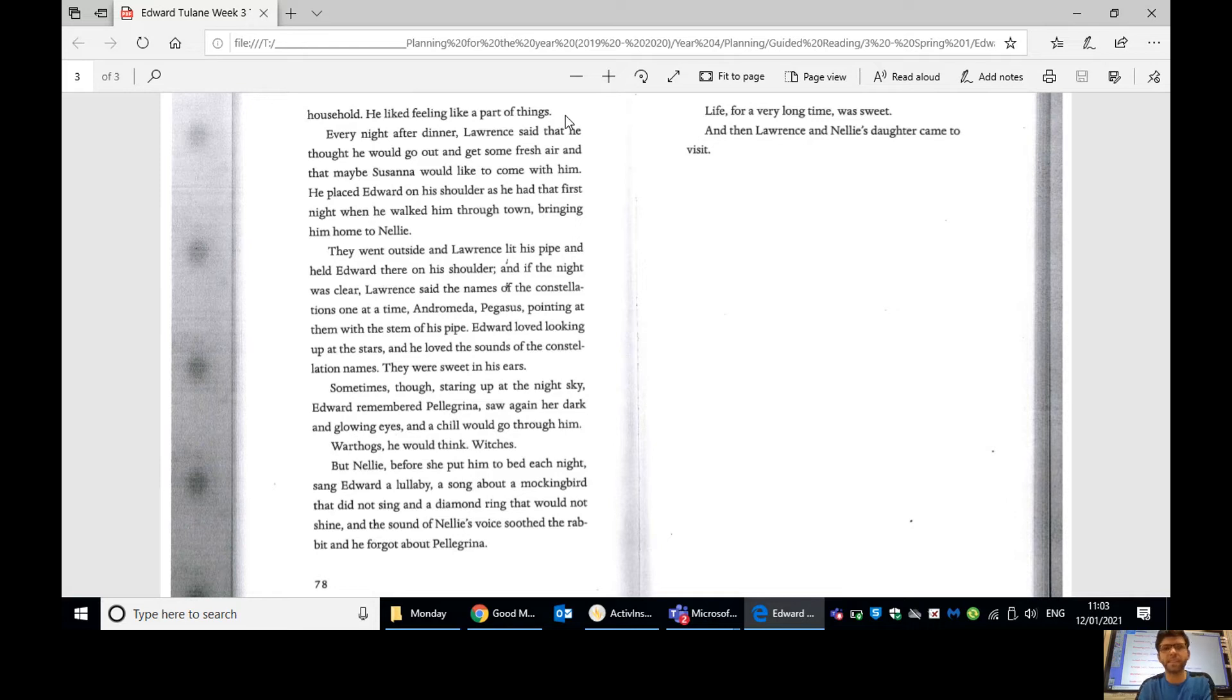So think about how he's feeling now, moving in with this maybe less elegant couple than the Tulane family. But how do you think he's finding it? I think he's quite enjoying it. He likes being part of the family, even though his life isn't quite as grand. Every night after dinner, Lawrence said that he thought he would go out and grab some fresh air, and that maybe Susanna would like to come with him. He placed Edward on his shoulder as he had that first night when he walked him through town, bringing him home to Nellie. They went outside, and Lawrence lit his pipe and held Edward there on his shoulder. And if the night was clear, Lawrence said the names of the constellations one at a time. Andromeda, Pegasus, pointing at them with the stem of his pipe. So constellations here mean the order of the stars in the sky and how they've shaped up. So he's looking at all the stars and their shapes in the sky.